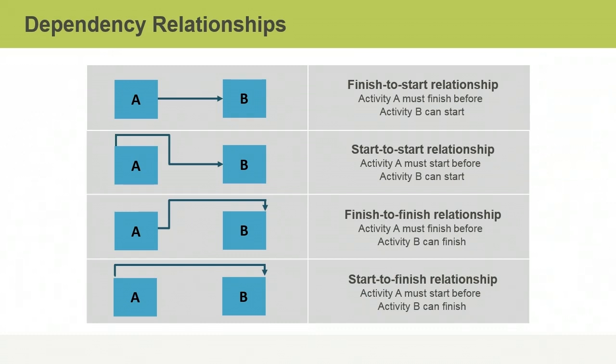In a start-to-finish relationship, one activity must start before another can finish. In a start-to-finish relationship, an arrow goes from the top left corner of activity A to the top right-hand corner of activity B.